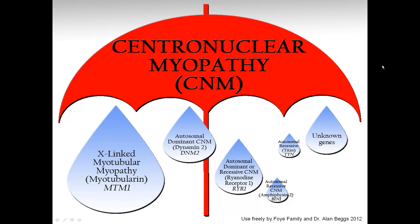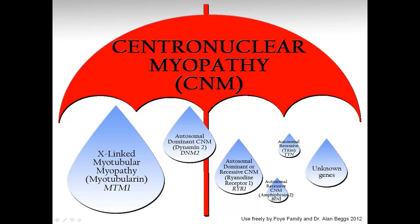There are still a number of genetic causes of centronuclear myopathy that remain unknown. So what we have is truly an umbrella term — centronuclear myopathy — sometimes made plural as centronuclear myopathies to make clear that there are a number of different subcategories. They all share the common feature of a centronuclear pattern on muscle biopsy, meaning the nucleus is in the center of the cell.